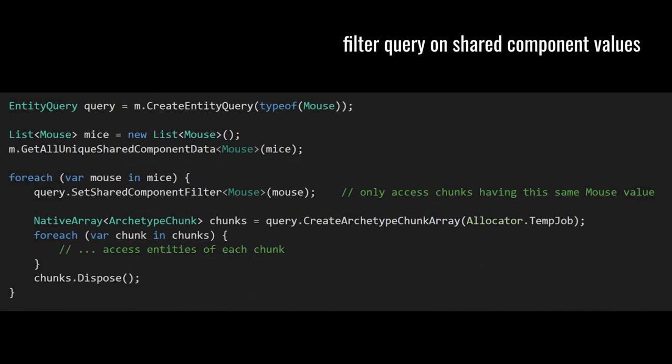This will have to change in the future once shared components can no longer reference managed objects. At that point, they'll lean on object components and blob assets, which we'll talk about in a minute. There are some scenarios, like the rendering example, where you want to iterate through all entities which share the same component value. We create a query that matches on any chunk that has the mouse shared component type, then pass a list of type mouse to getAllUniqueSharedComponentData, which populates the list with every unique mouse value. In the loop, for every mouse, we set the mouse value as a filter on the query so the query only matches chunks with that particular mouse value, get all matching chunks, and go through all their entities.